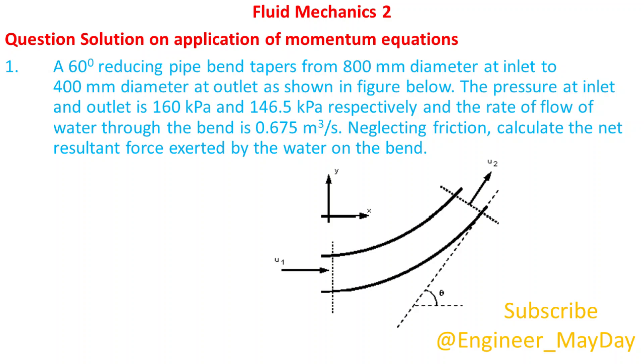The pressure at inlet and outlet is 160 kPa and 146.5 kPa respectively and the rate of flow of water through the bend is 0.675 cubic meters per second. Neglecting friction, calculate the net resultant force exerted by the water on the bend.